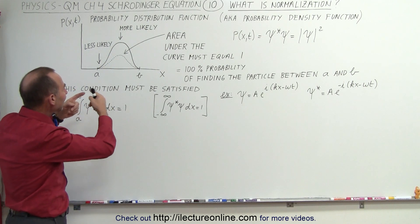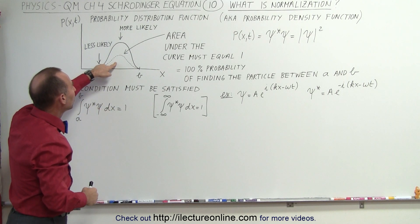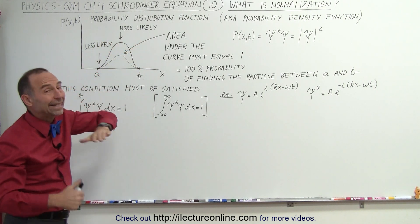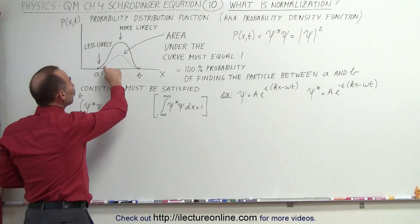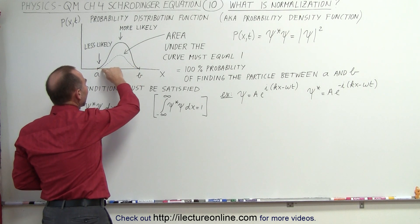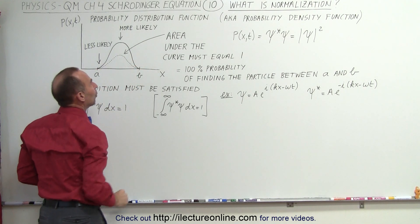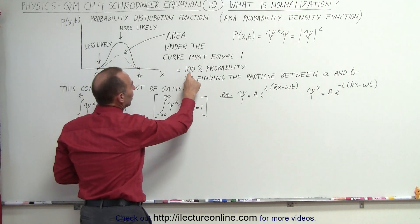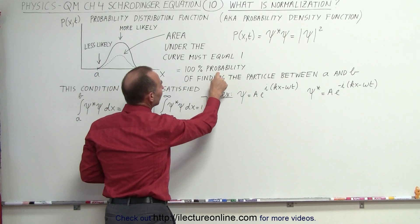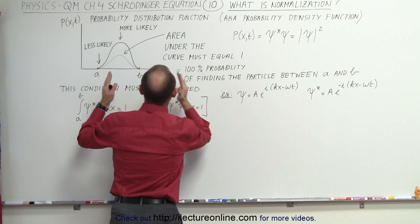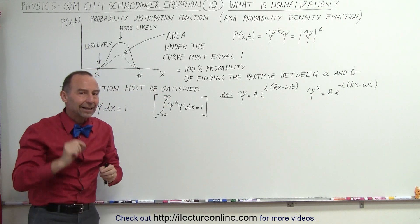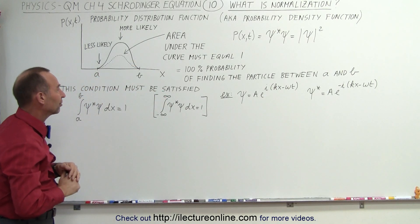But in order to make that into a probability function, not a probability distribution or probability density function, we have to normalize this. We have to make sure that the area underneath this curve equals 1. That means then that there is a 100% probability of finding that particle between a and b if the area underneath the curve is exactly equal to 1, which of course is 100%.